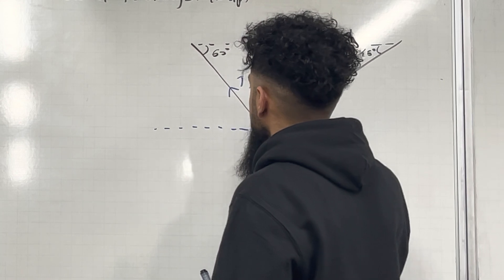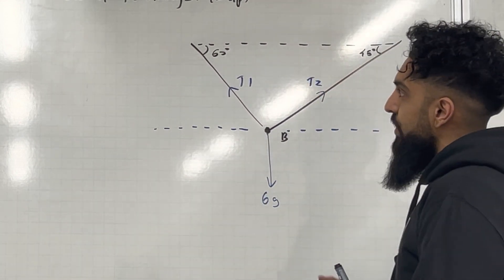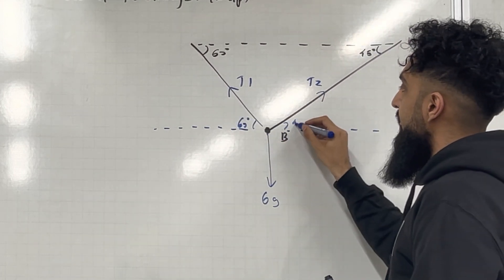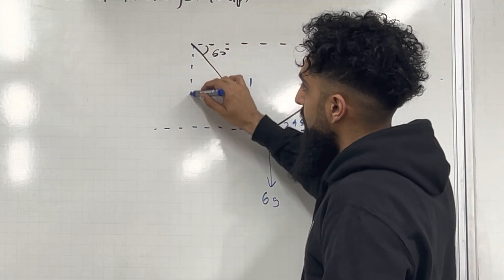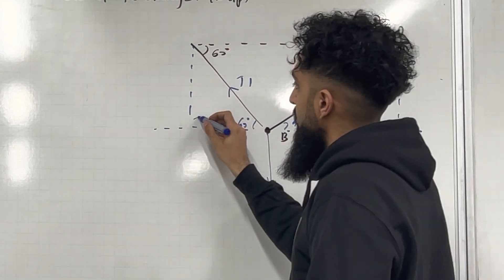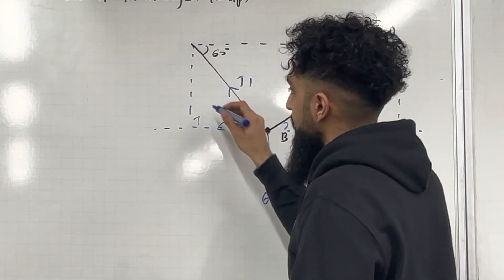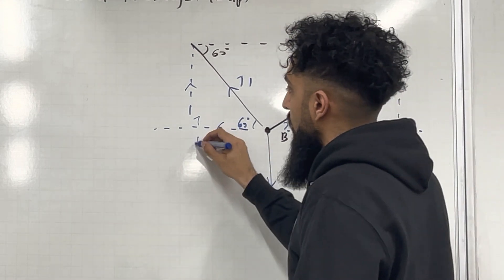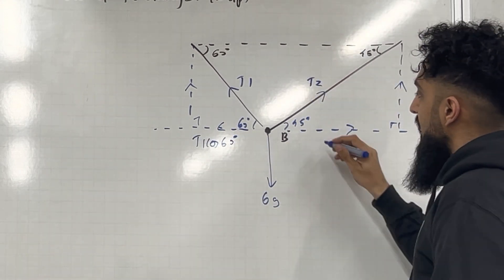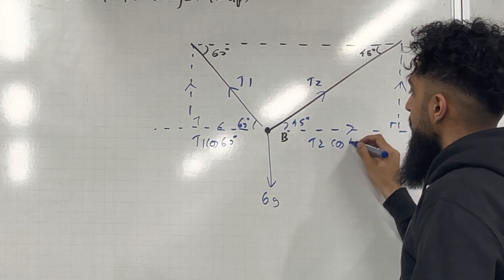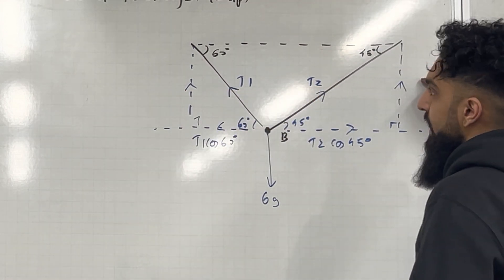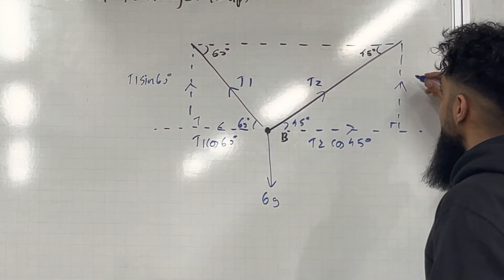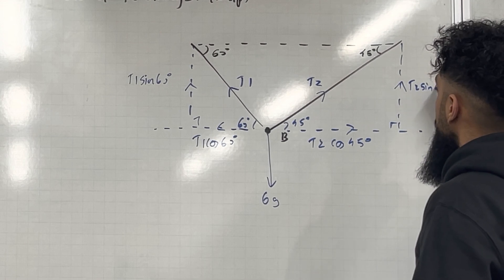Alternate angles are equal, so if this angle is 60°, this is 60°; if this is 45°, this is 45°. Drop a perpendicular and form a right-angle triangle, putting in the arrows. The adjacent components are T1 cos 60° and T2 cos 45°. The opposite components are T1 sin 60° and T2 sin 45°.